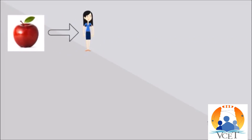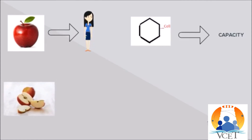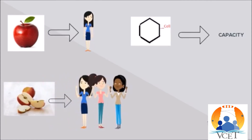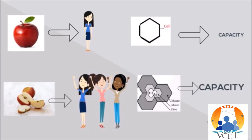For example, consider a single apple — only one person can eat it, so the capacity is 1. Similarly, for a single cell, the capacity of coverage is limited. But when the apple is cut into pieces, it can be shared by more than one person, increasing capacity. Similarly, when a single cell is split into a smaller number of cells, the capacity of coverage increases.